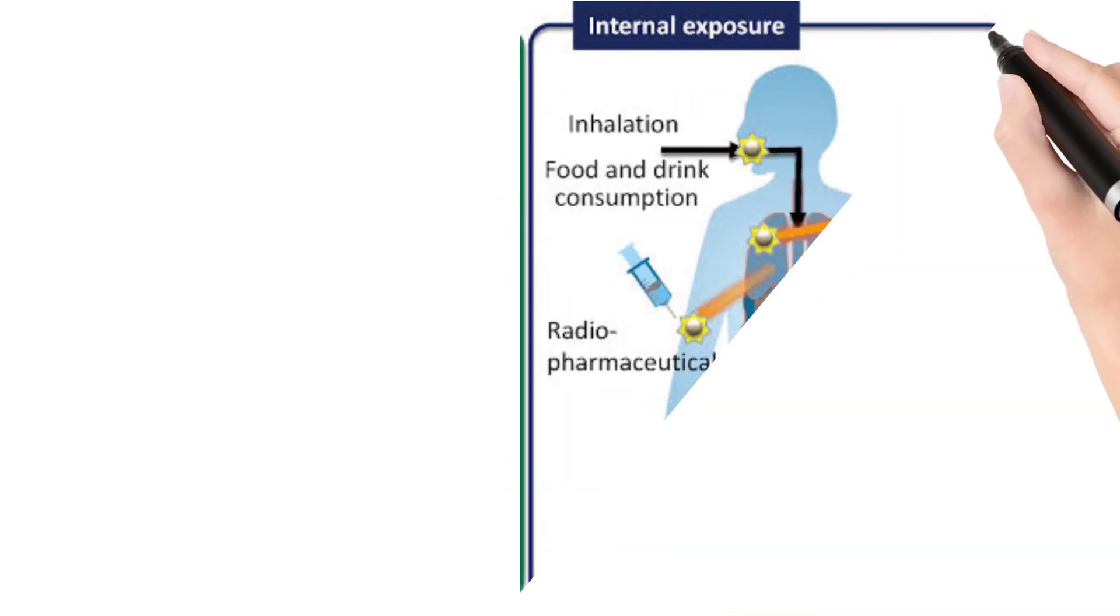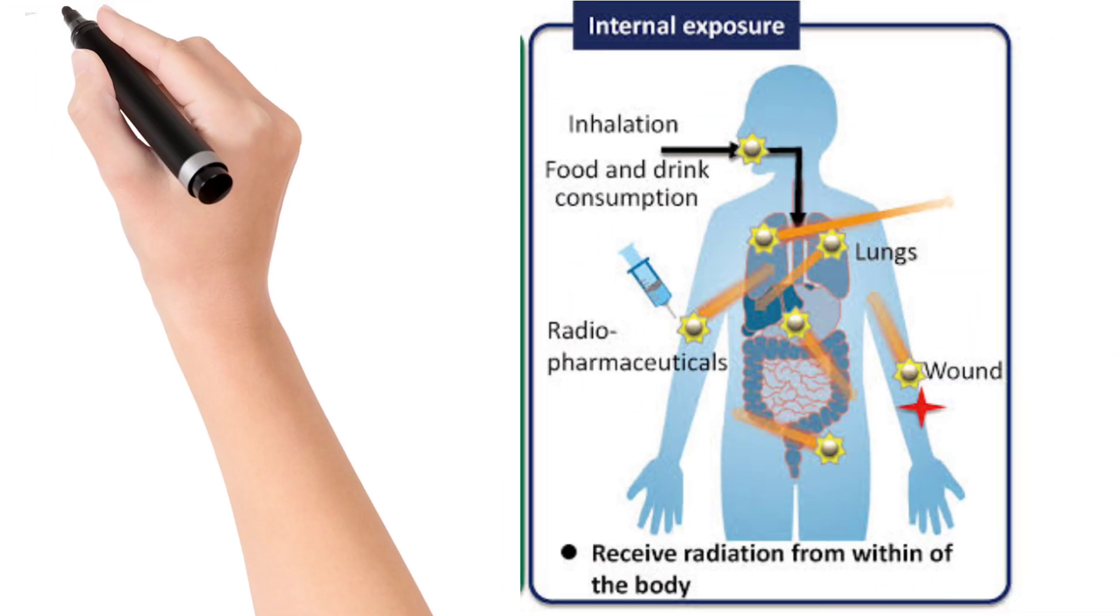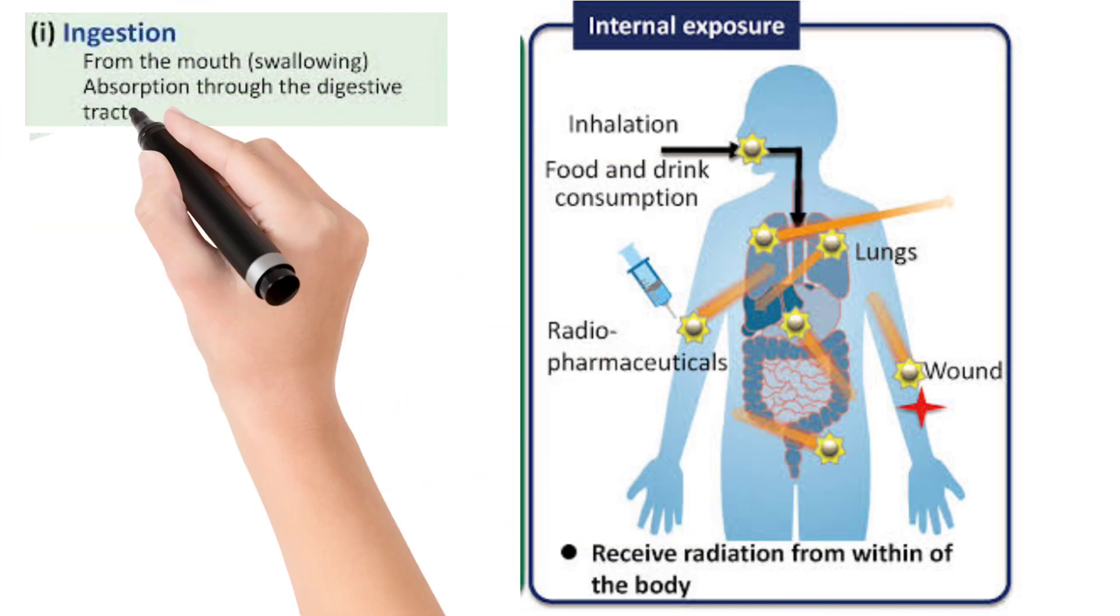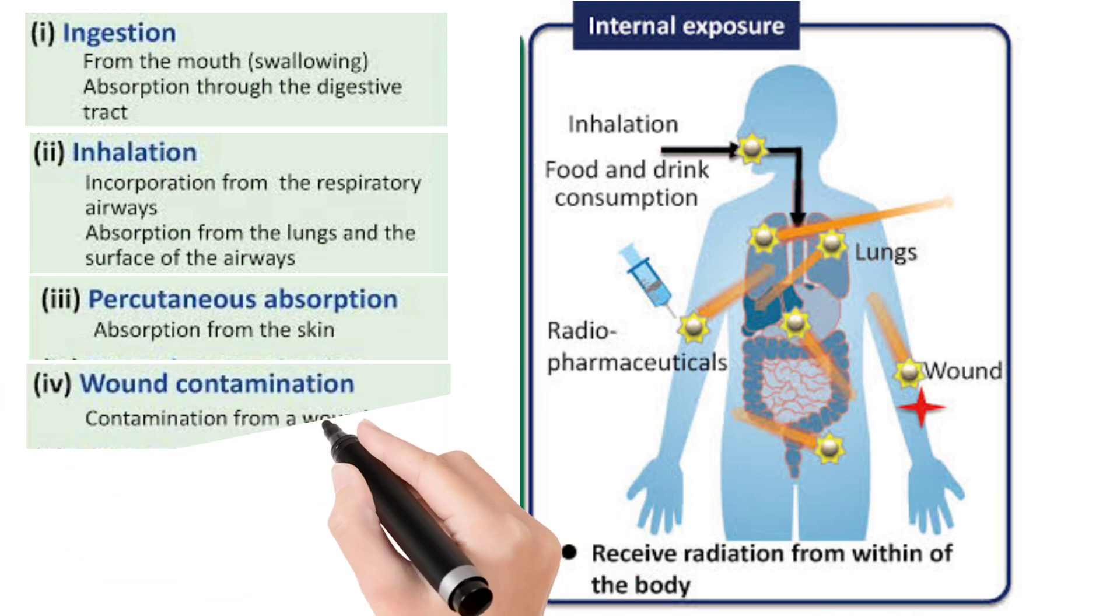These are the different pathways through which radioactive material enters into the body: ingestion, inhalation, absorption from skin, wound contamination, and intake of radiopharmaceutical.